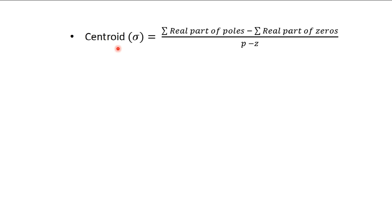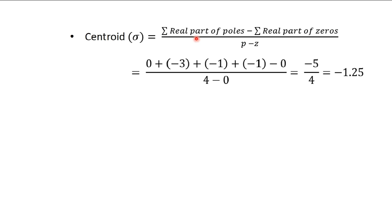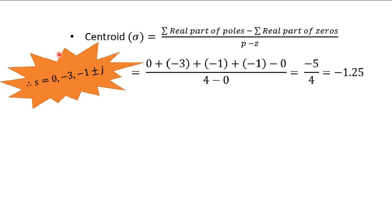We will find the centroid. The formula is: centroid = (sum of real parts of poles − sum of real parts of zeros) / (P − Z). The real parts of the poles are 0, −3, −1, and −1 (from −1+j and −1−j). There are no zeros. So centroid = (0 − 3 − 1 − 1 − 0) / (4 − 0) = −5/4 = −1.25. Our centroid lies on the real axis at −1.25.